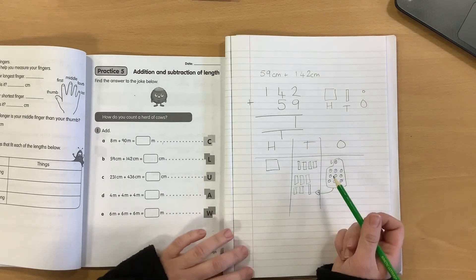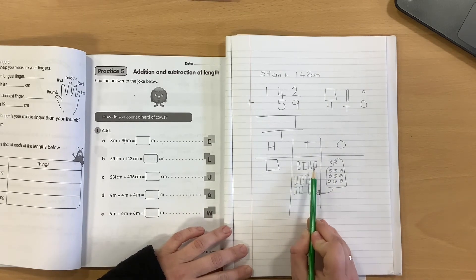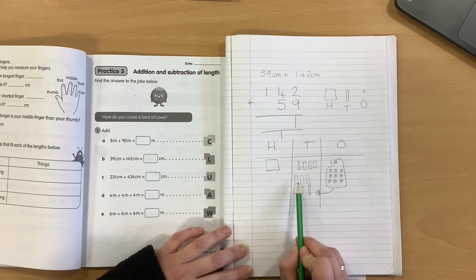I can calculate the total of my tens column. Ten, twenty, thirty, forty, fifty, sixty, seventy, eighty, ninety, one hundred. So, if I have ten tens, I have one hundred.